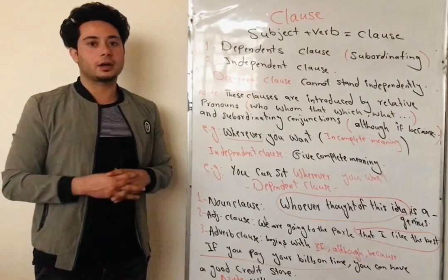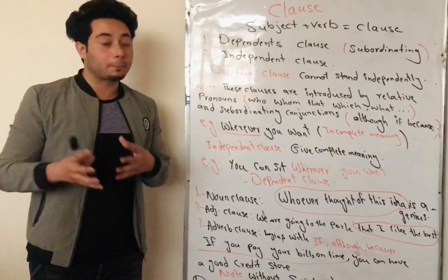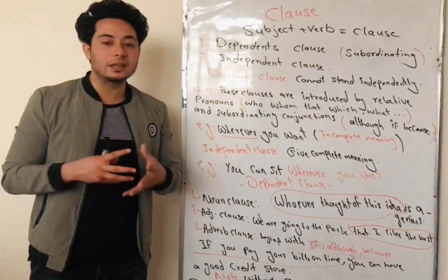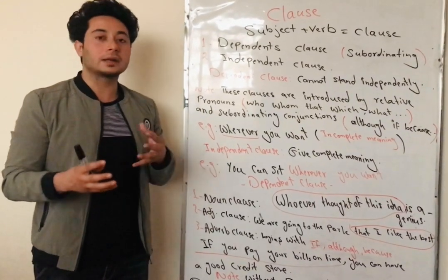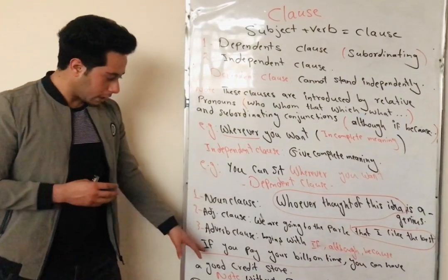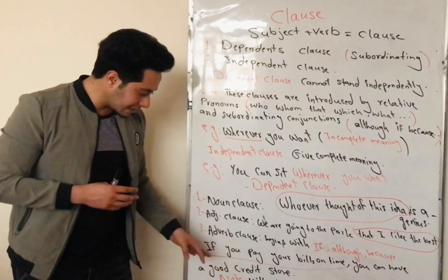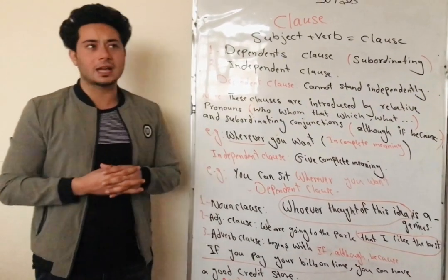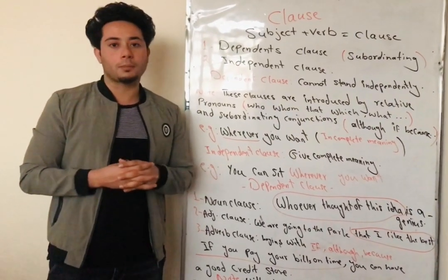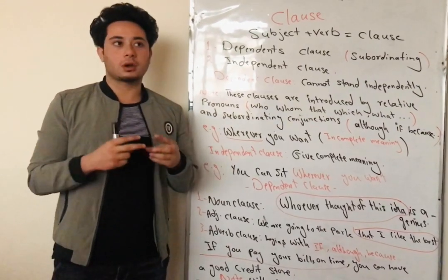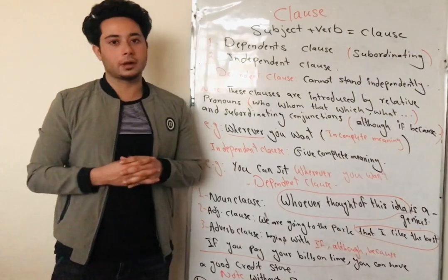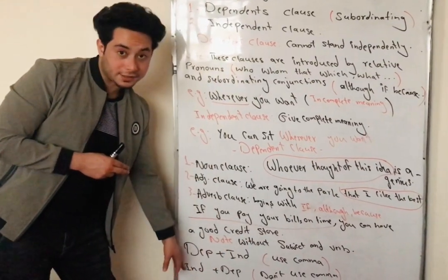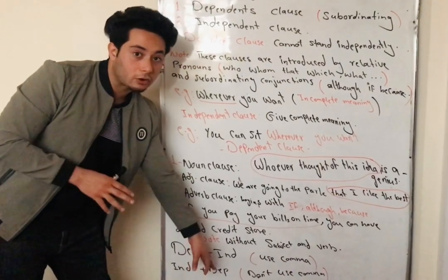Let's talk about the third type of dependent clause, which is called the adverb clause. An adverb clause is a dependent clause introduced by a subordinating conjunction, like unless, if, although, or because. For example: 'If you pay your bills on time, you can have a good credit score.' In this sentence, 'if you pay your bills on time' is an adverb clause. Now let's have a note on punctuation — using the comma properly between clauses. When a dependent clause comes first and precedes the independent clause, we need to use a comma between them. But when an independent clause comes first and precedes the dependent clause, there is no need for a comma — we should not use any comma.